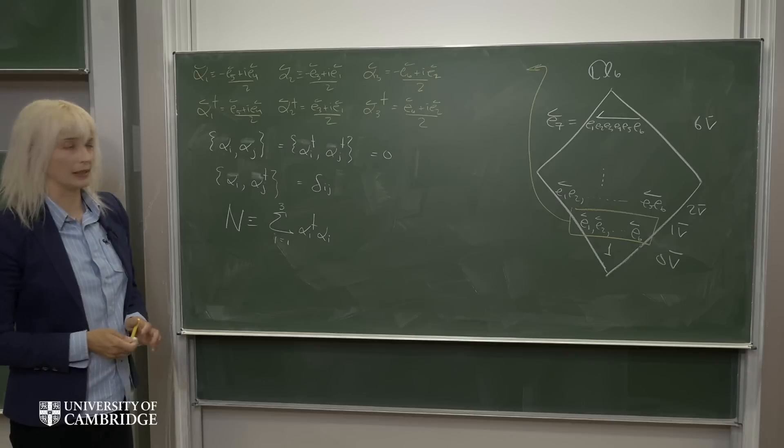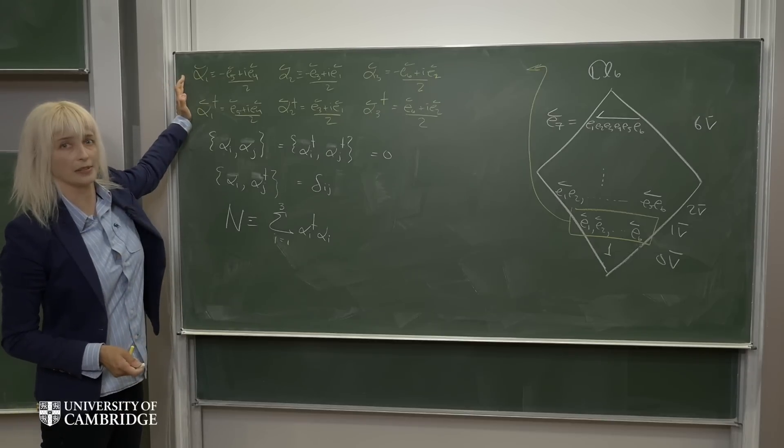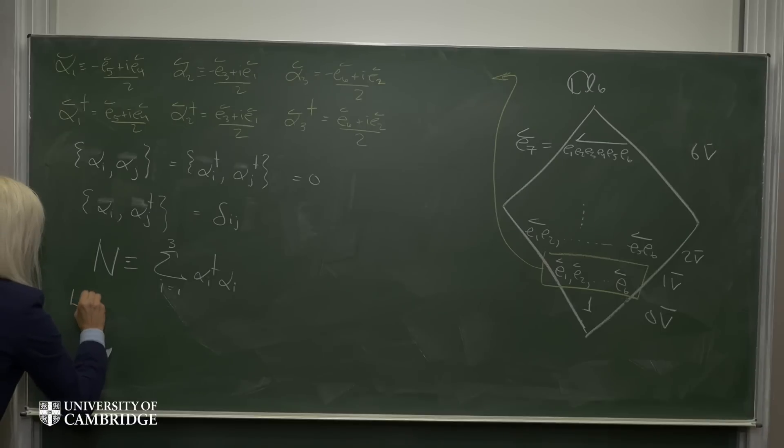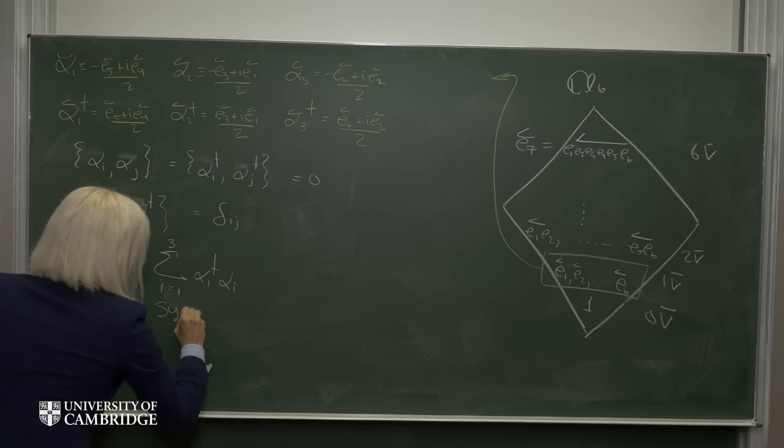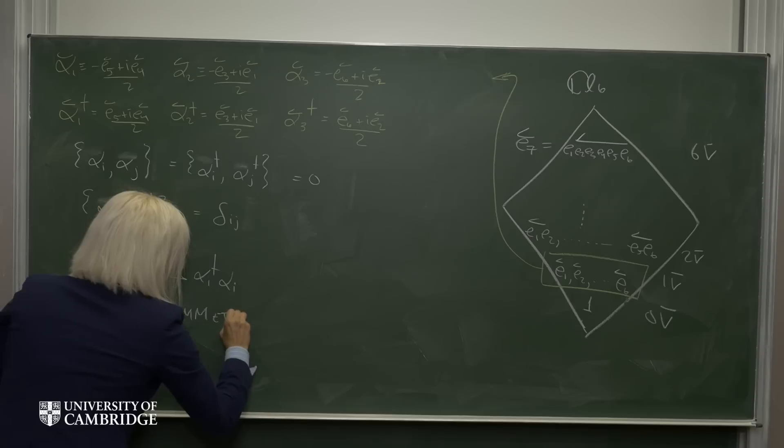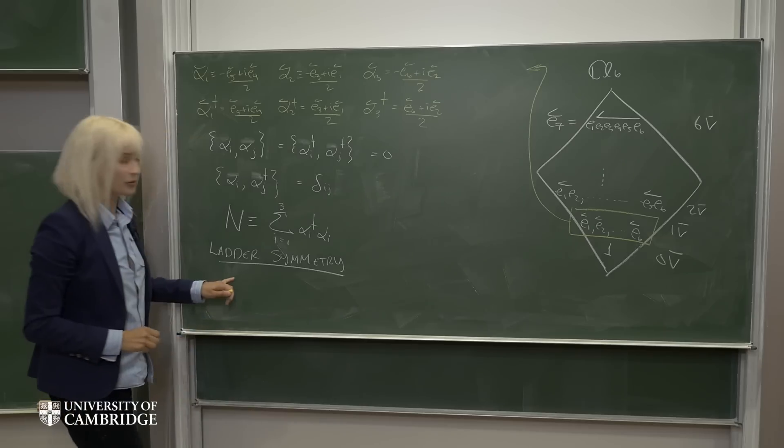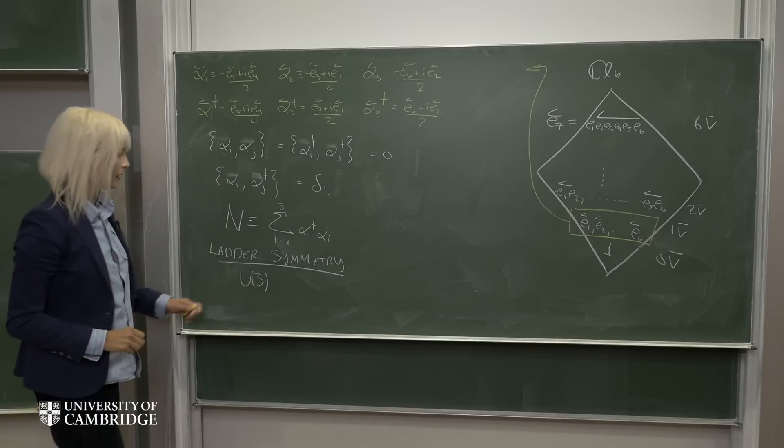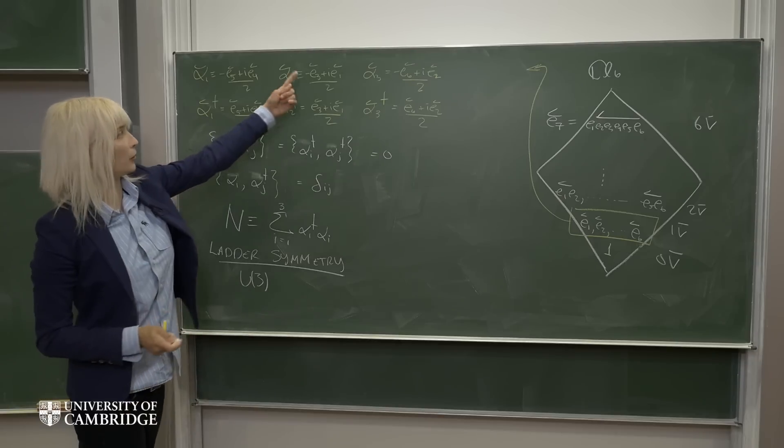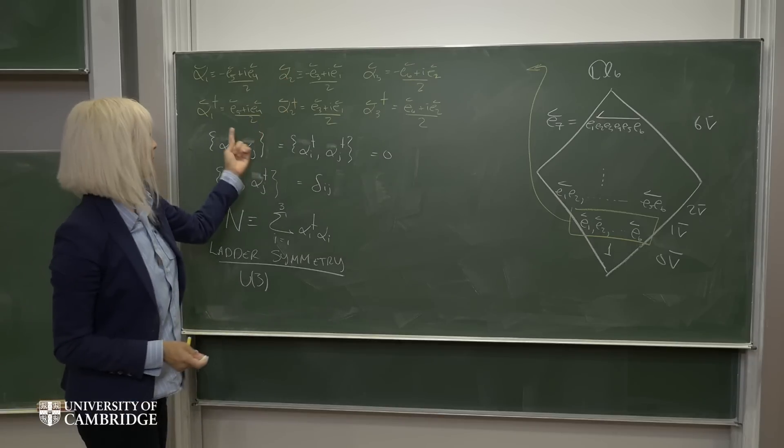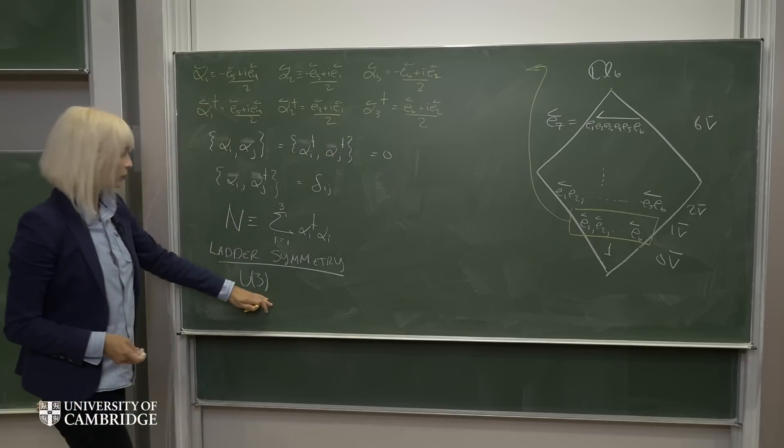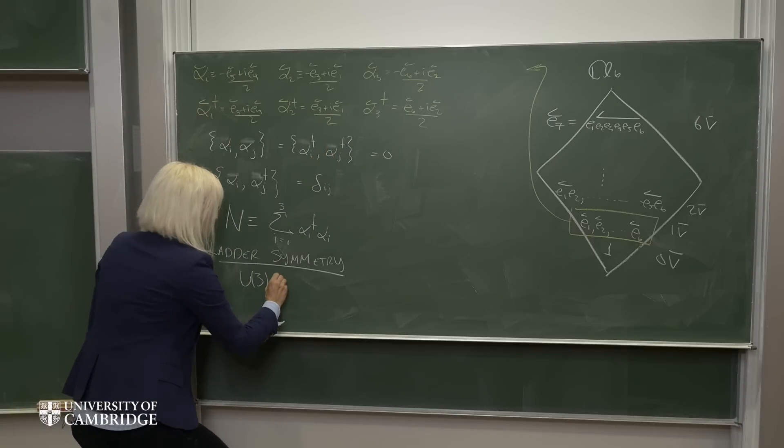And now finally, it turns out that these ladder operators have a unitary symmetry that acts on them. That symmetry is given by U3. So this U3 will rotate the lowering operators into lowering operators and these raising operators into raising operators. So U3, it turns out, is equal to SU3 cross U1 over Z3.